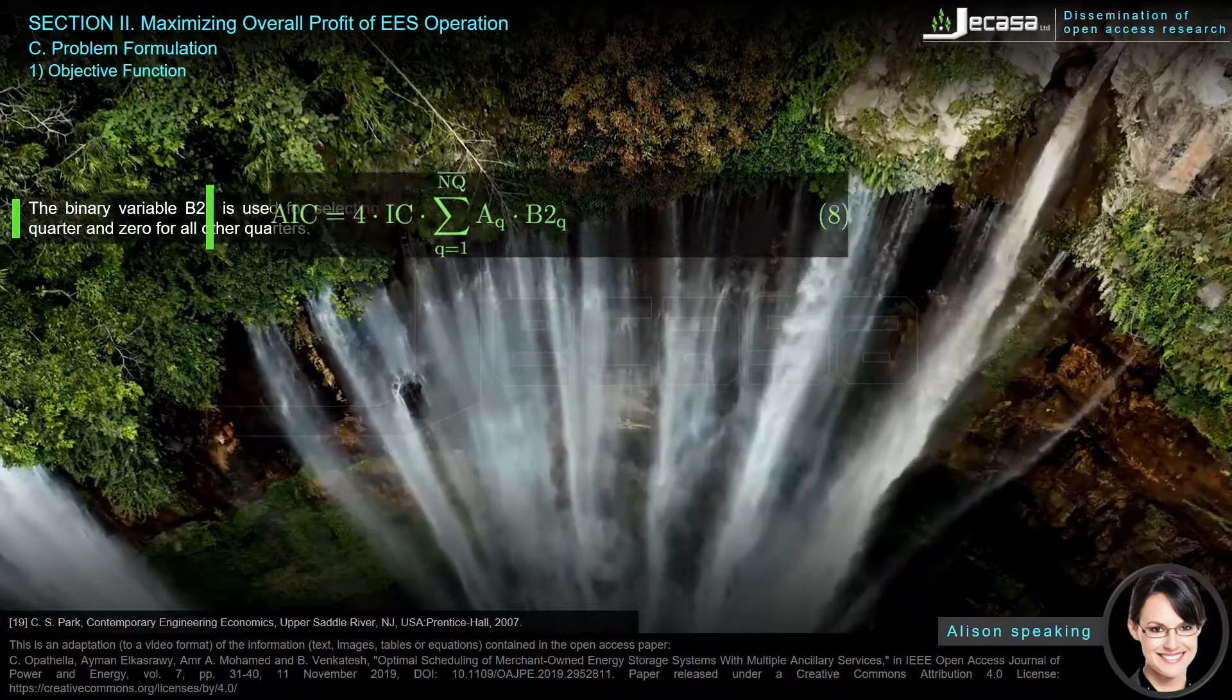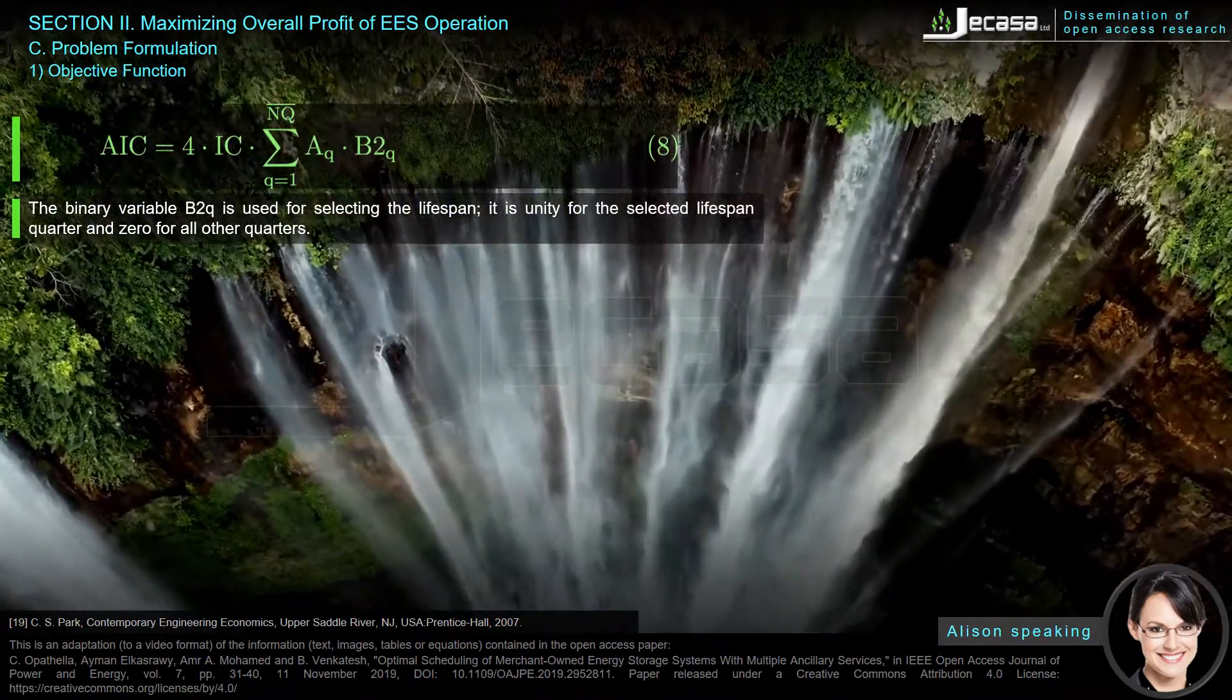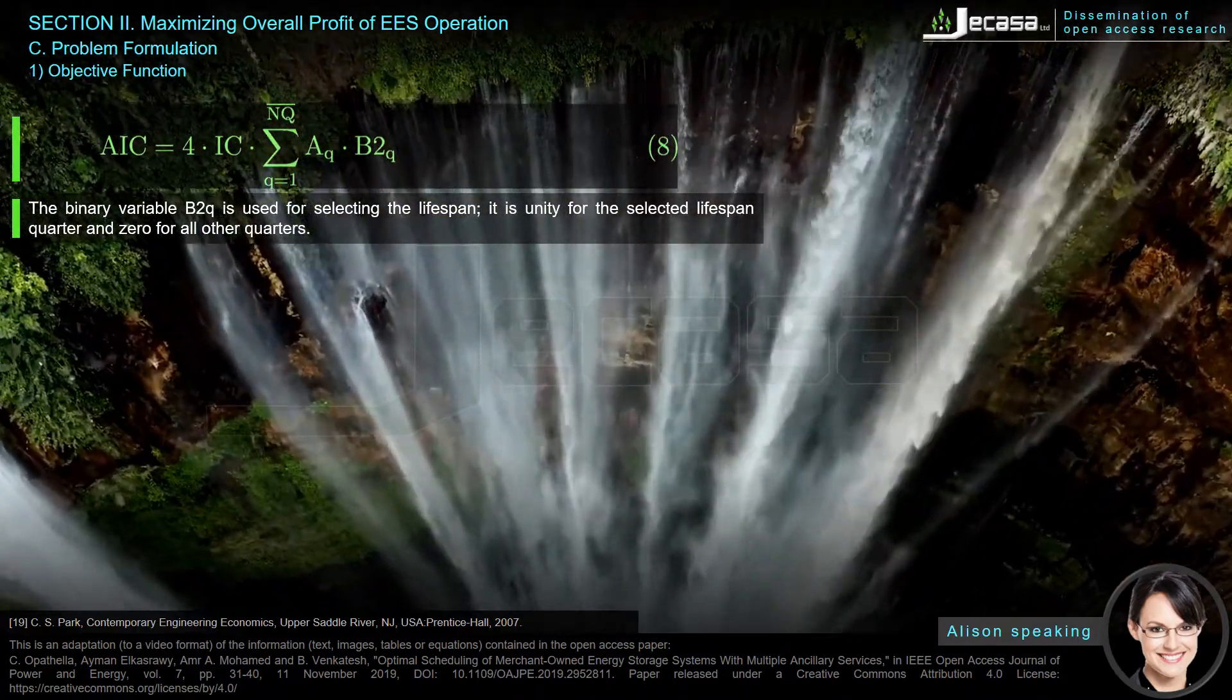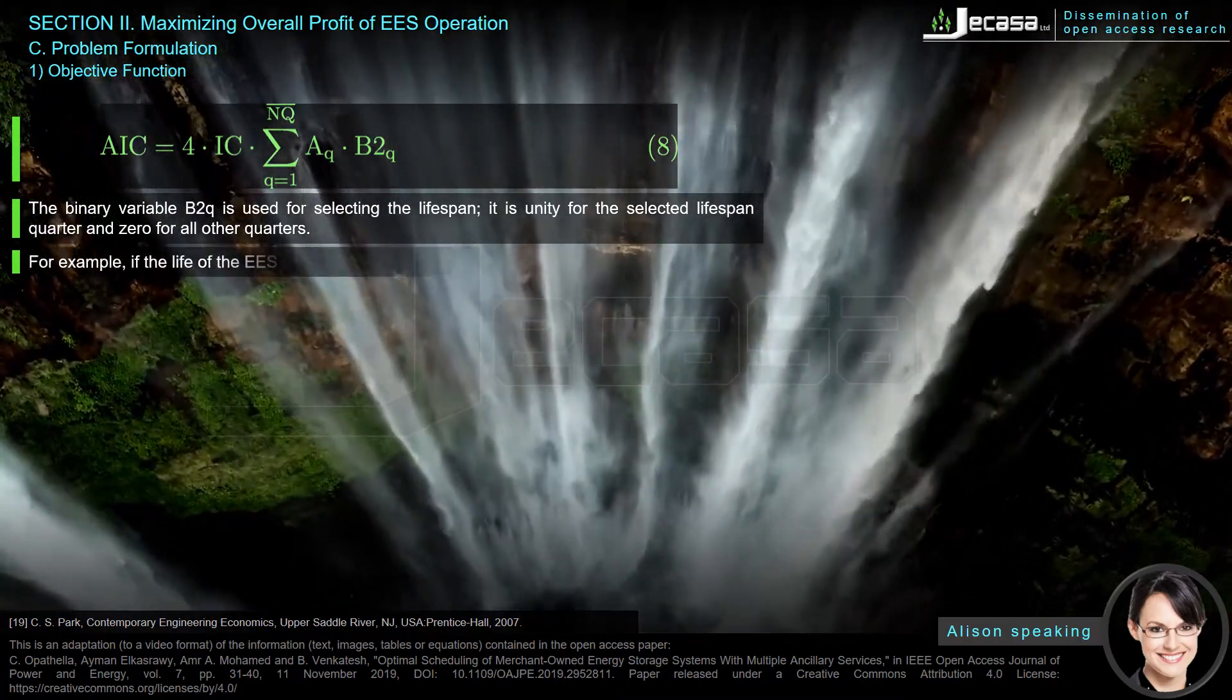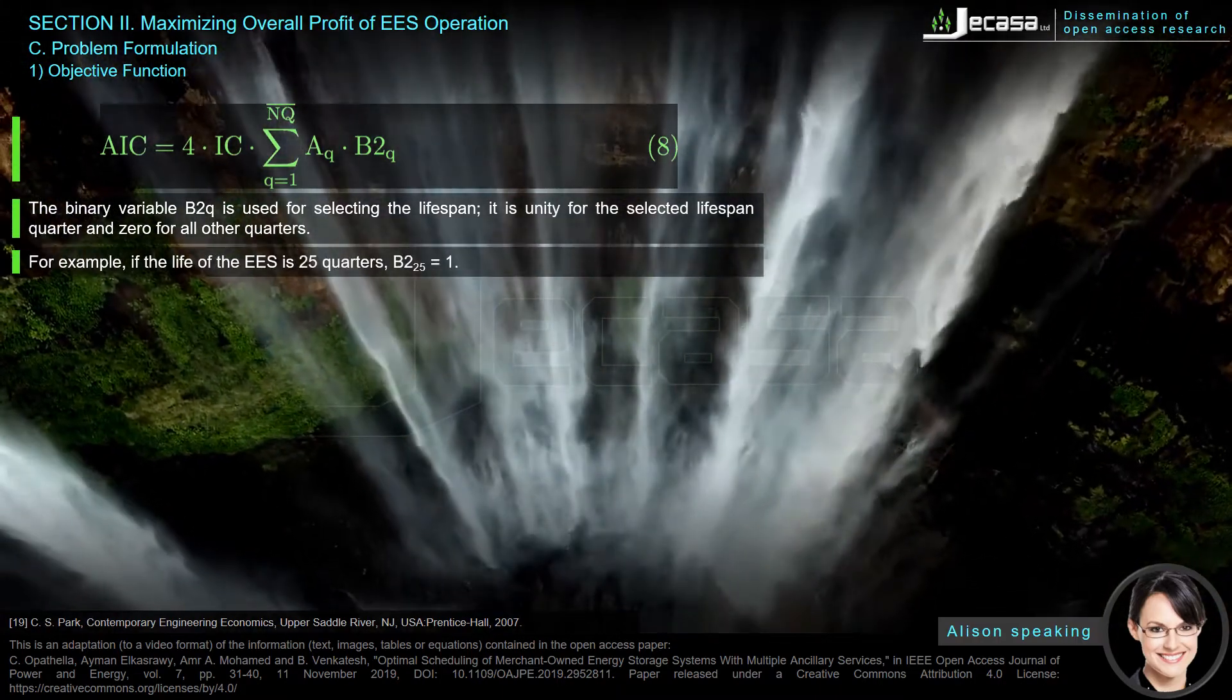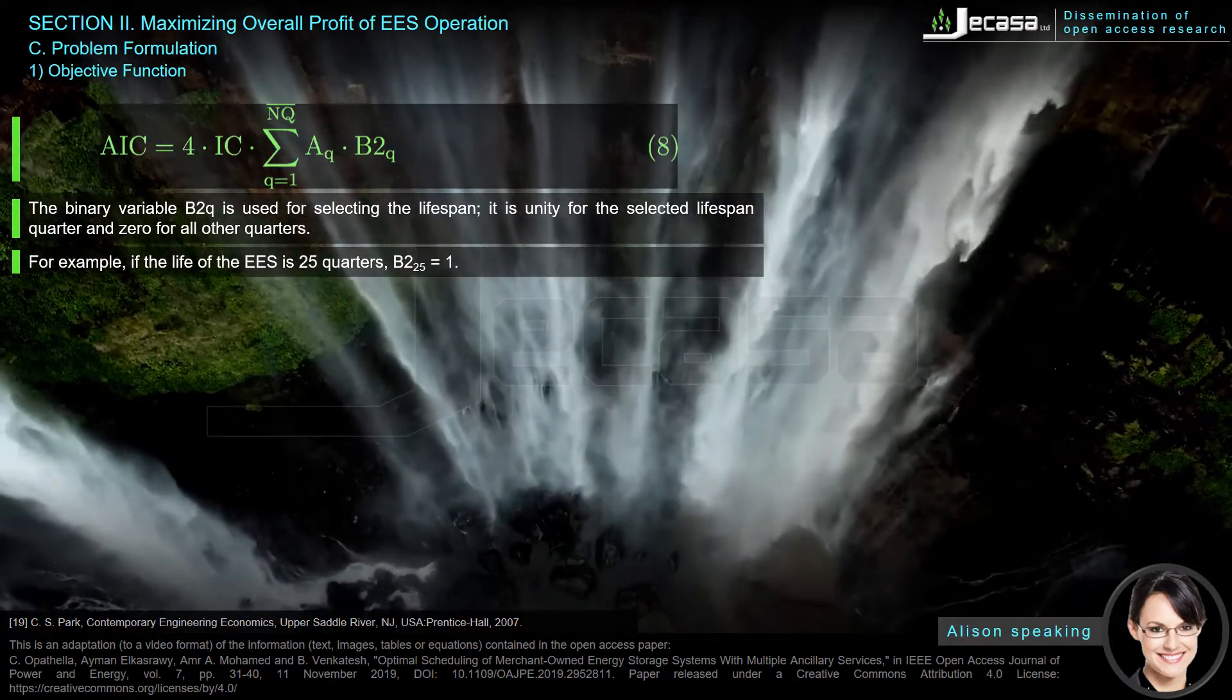The binary variable B2Q is used for selecting the lifespan. It is unity for the selected lifespan quarter and zero for all other quarters. For example, if the life of the EES is 25 quarters, B2(25) equals 1.